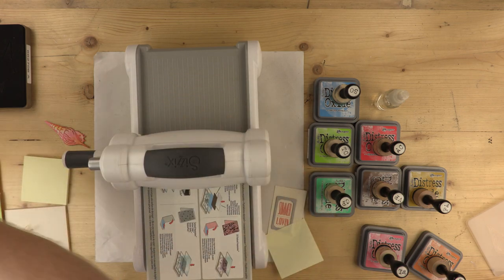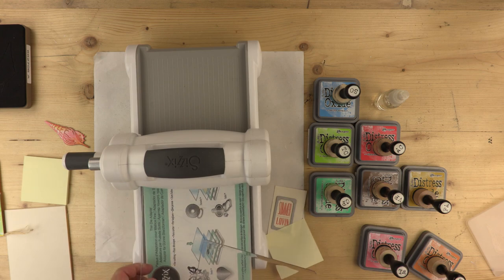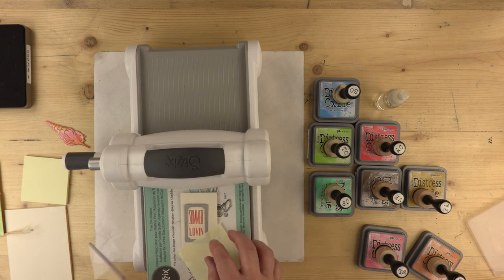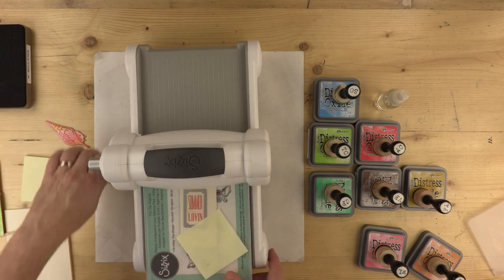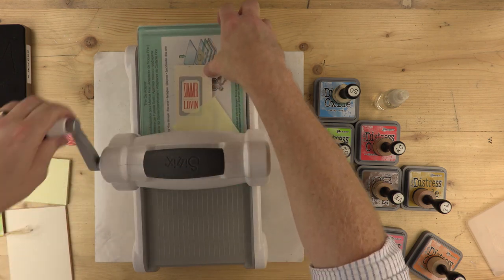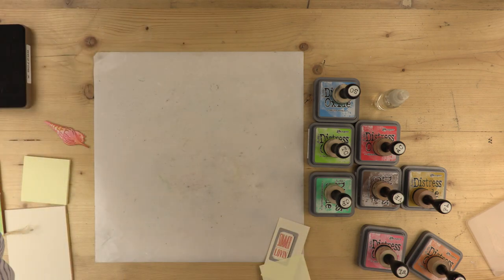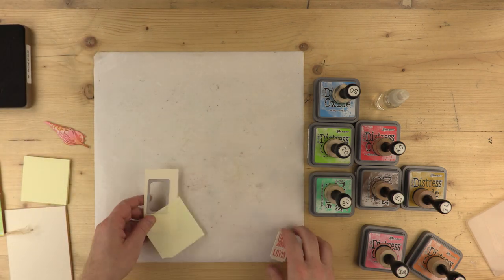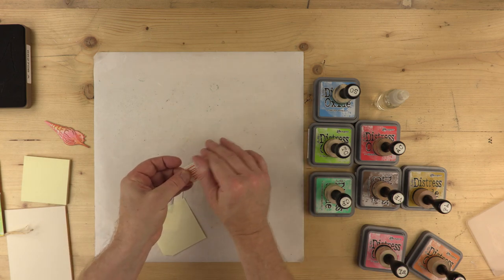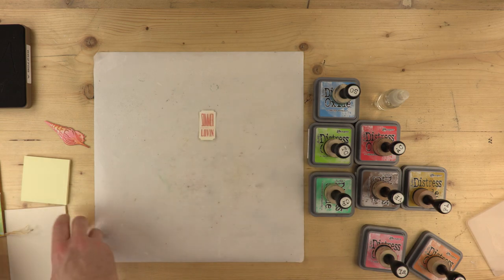So there we are, we're bringing the machine again. Now this time, of course, we need to go to the top level of our platform. So we put that shim in there. Bottom plate down. Die and card in place, and simply wind it through. I'm going to take it out. And that's it. There's our little ticket. And what I'm doing, you see, I'm using my fingers and thumb to give that a slight curl. Because it's time to put my card together.